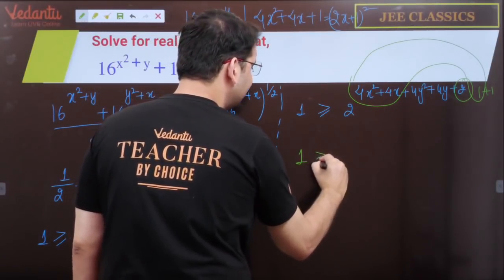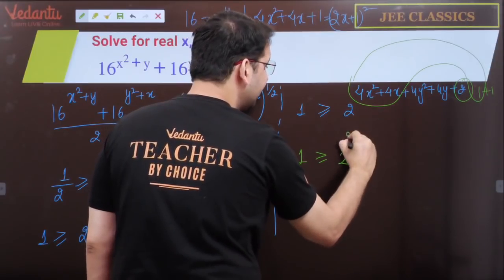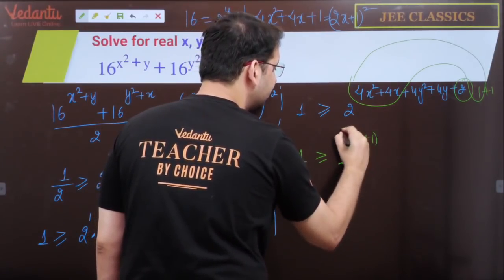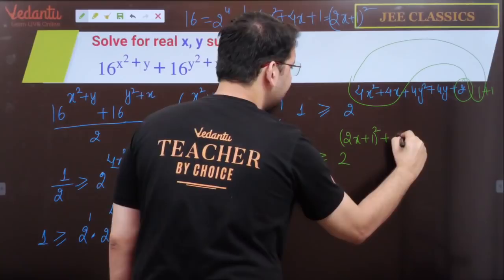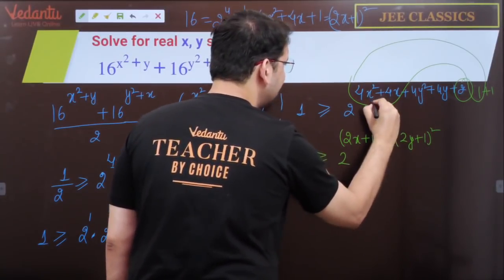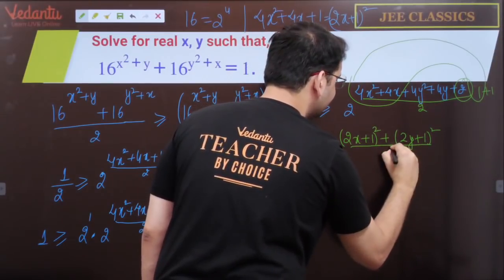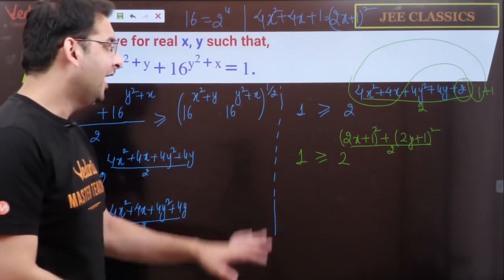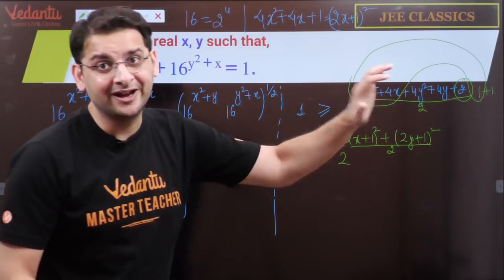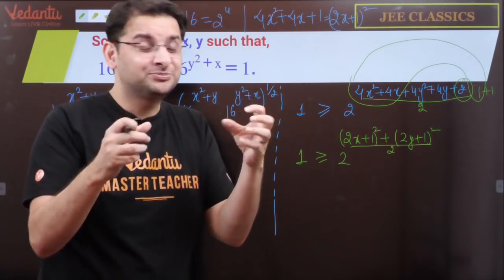So 1 ≥ 2^[(2x+1)² + (2y+1)²]/2, and we keep the divided by 2 here.